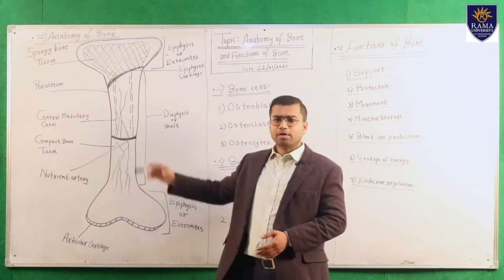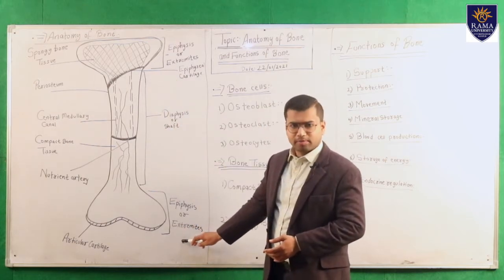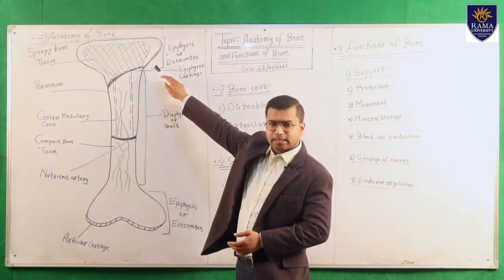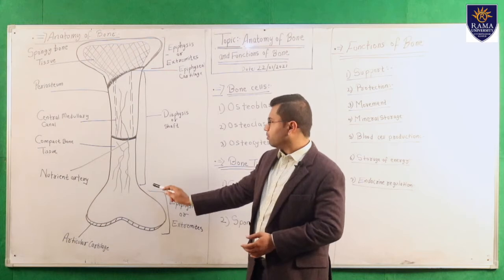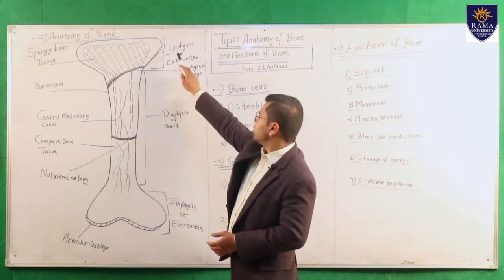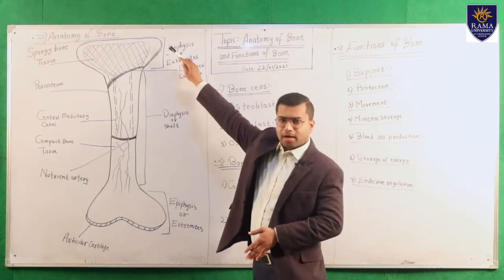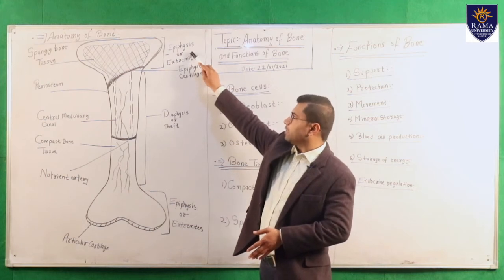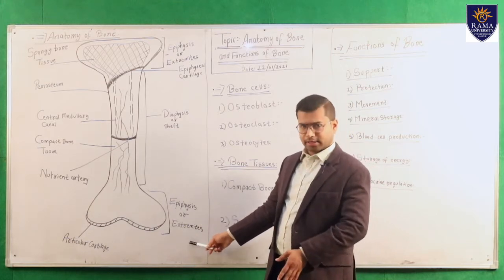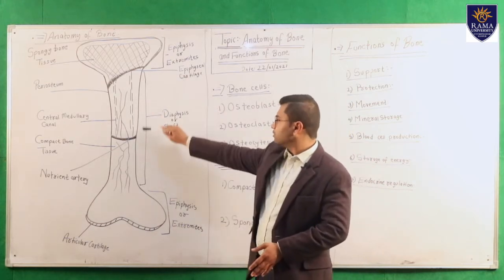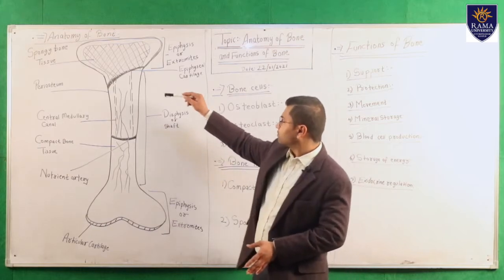In the anatomy of bone, the bone is divided into upper extremities, lower extremities, and a mid portion. The upper extremities are known as the upper epiphysis, the lower portion is the lower epiphysis, and the middle part is known as the diaphysis, also called the shaft.